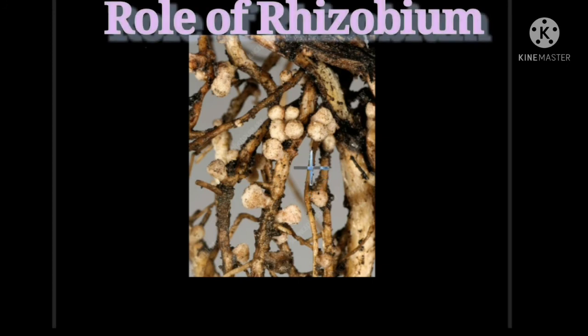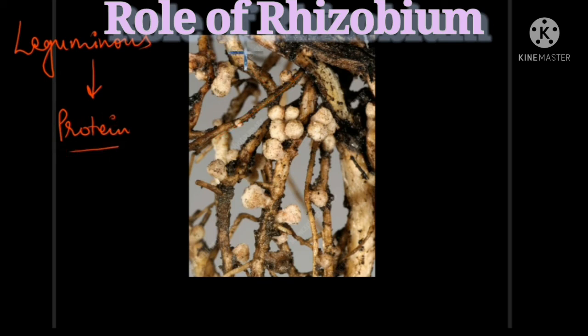We will see the role of Rhizobium in this diagram. These are the roots of leguminous plants. Leguminous plants are those plants which have high content of protein compared to other plants. The roots of such plants have nodules in them. As here we can see, the nodules are swollen parts.